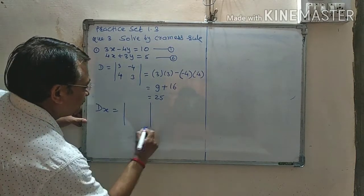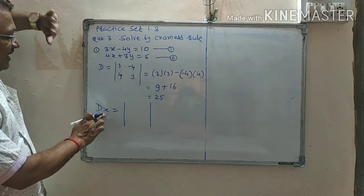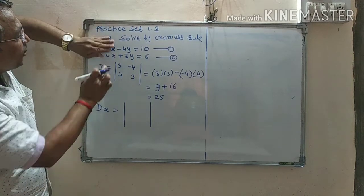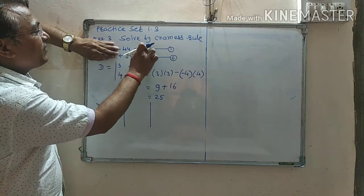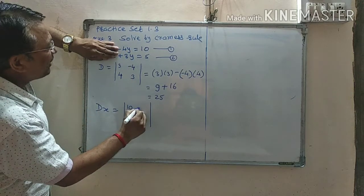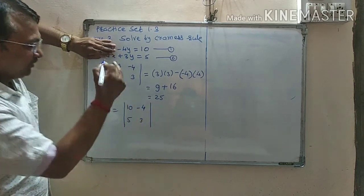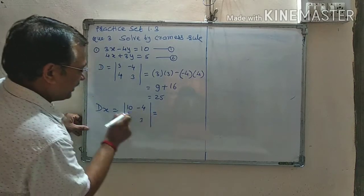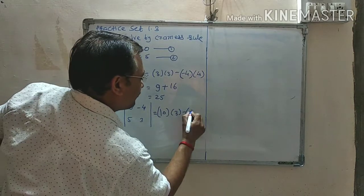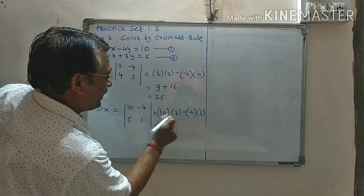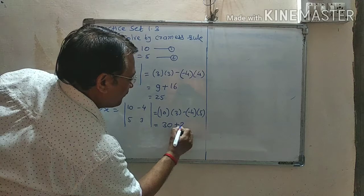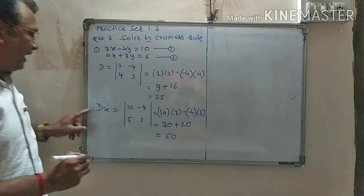DX is equal to - be careful - when calculating DX, we drop the x coefficient. So for DX, we drop x coefficient. Then what comes there? The constants: 10 and 5. And then y's coefficients: minus 4 and 3. In this way DX is equal to, cross multiplication again: 10 into 3 minus minus 4 into 5. It is equal to 10, 3 is 30 minus minus plus, 5, 4 is 20. It is equal to 50. This is DX.